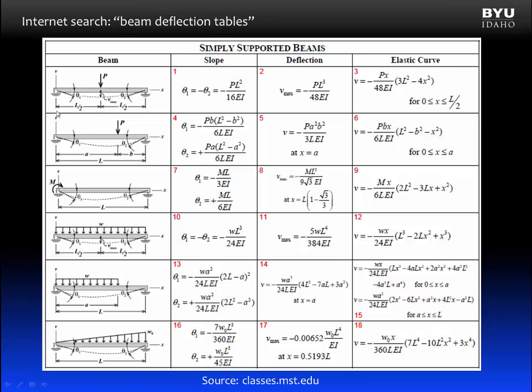For example, let's look at the top row. Here's a simply supported beam with a point load right in the center. The deflection table gives values for the slopes theta 1 and theta 2, which are shown in the figure. Here is theta 1 on the left end, theta 2 on the right end. It also gives an equation for the maximum deflection. V represents deflection, and in the picture, we see that the max deflection occurs right at the middle of the beam. And we also get an equation for the elastic curve. The equation that is shown is valid for x is greater than or equal to 0 and less than or equal to L over 2.